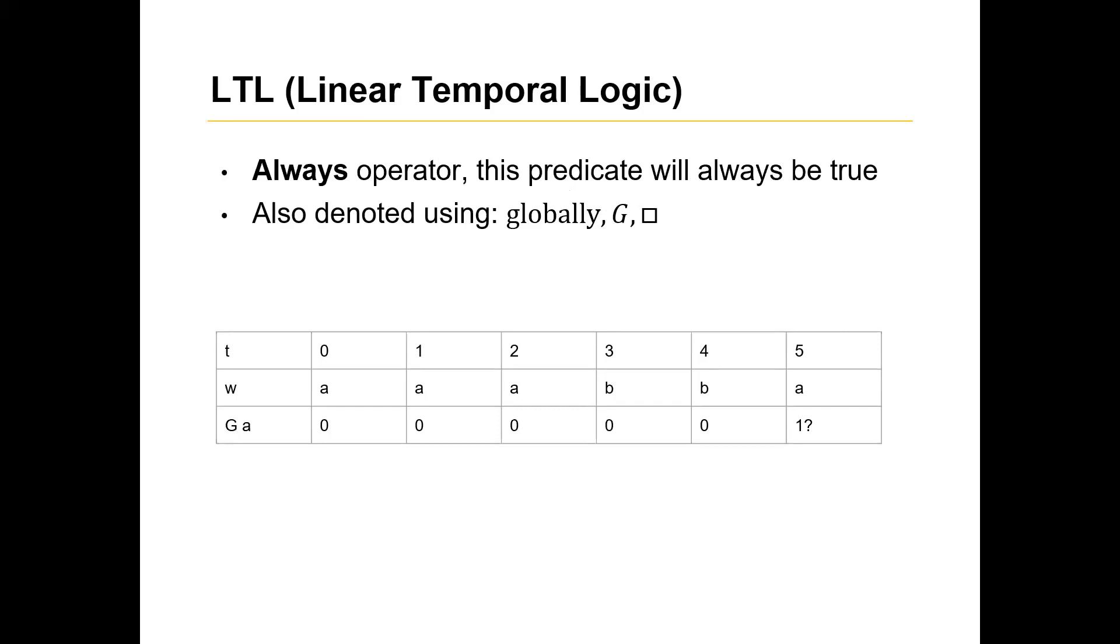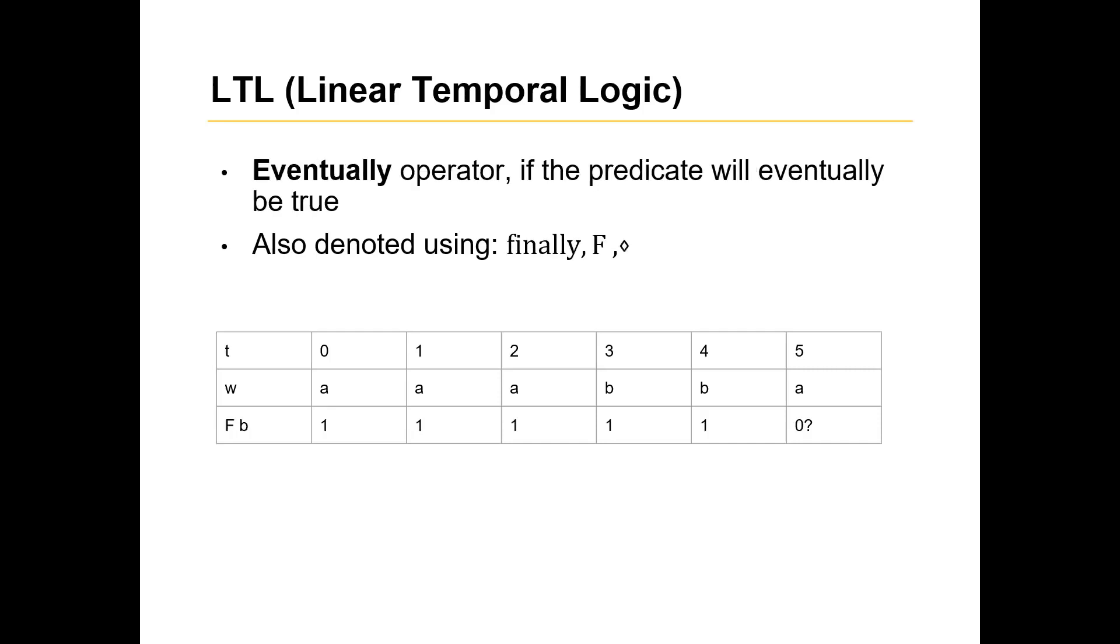The always operator is indicating something will always happen. So here, if we do always A, it's 0, right, because this B occurs. But at this point, it could continue A. From this point onward, it just could be A. And so then always holds true after this point. Then finally, or it's also referred to as eventually. Just means eventually something will happen. Kind of the inverse of always. And so if we go eventually B, will eventually B happen? But here, at this step, we don't know if eventually another B will happen.